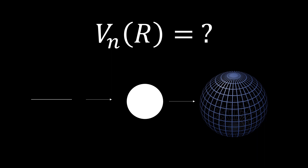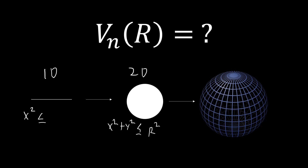So I have a little example here. This is a one-dimensional sphere, which is essentially just a line, defined by x² ≤ 1. And then we also have a two-dimensional sphere, better known as a circle — or more accurately a disk — defined by x² + y² ≤ 1, or r² if you prefer.